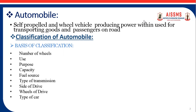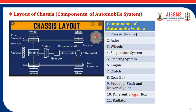These are the classifications of vehicles. Now let's discuss the layout of the chassis. The chassis, also called the frame, is the main and important part of the automobile on which all other components are mounted.